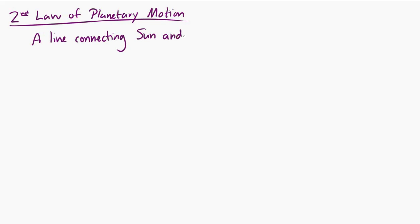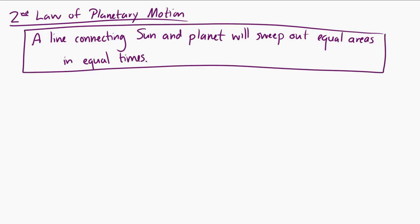Kepler's second law of planetary motion is that a line connecting the sun and the planet will sweep out equal areas in equal times. I'll draw a picture of what this is trying to say. Here's an elliptical orbit with the sun at a focus. And I'm going to draw point 1 and point 2 for the planet in its orbit, and then point 3 and point 4 for the planet in its orbit.